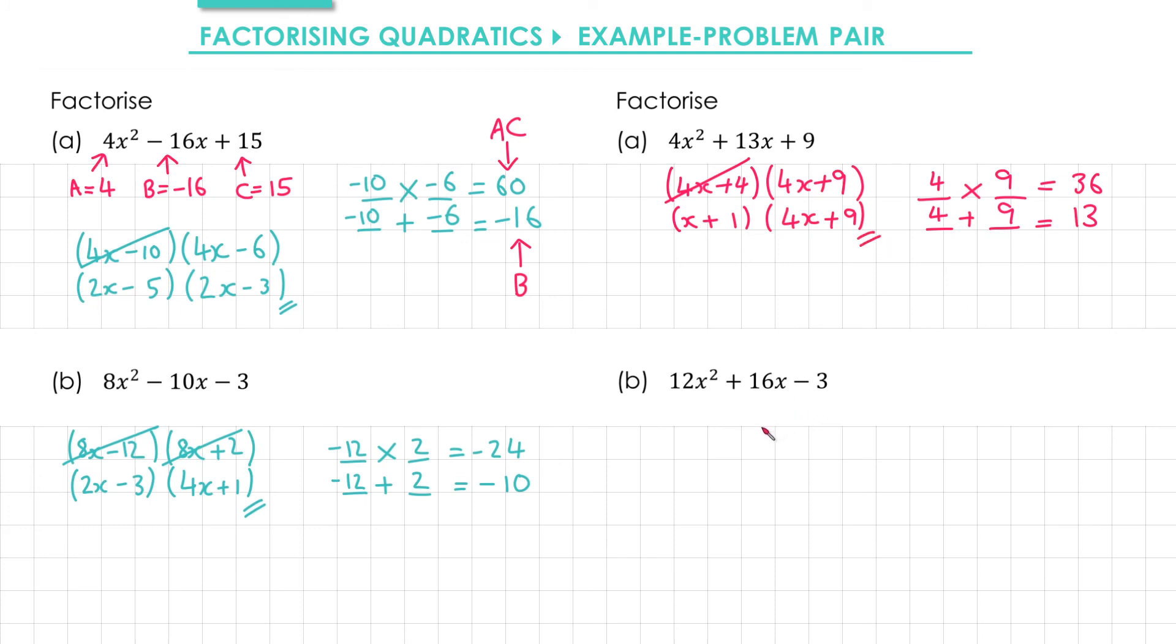In part b, we want two numbers that multiply together to make 12 times negative 3, which is minus 36. We also want the same two numbers to add to give us b, which is positive 16. The numbers we're looking for are 18 and negative 2.